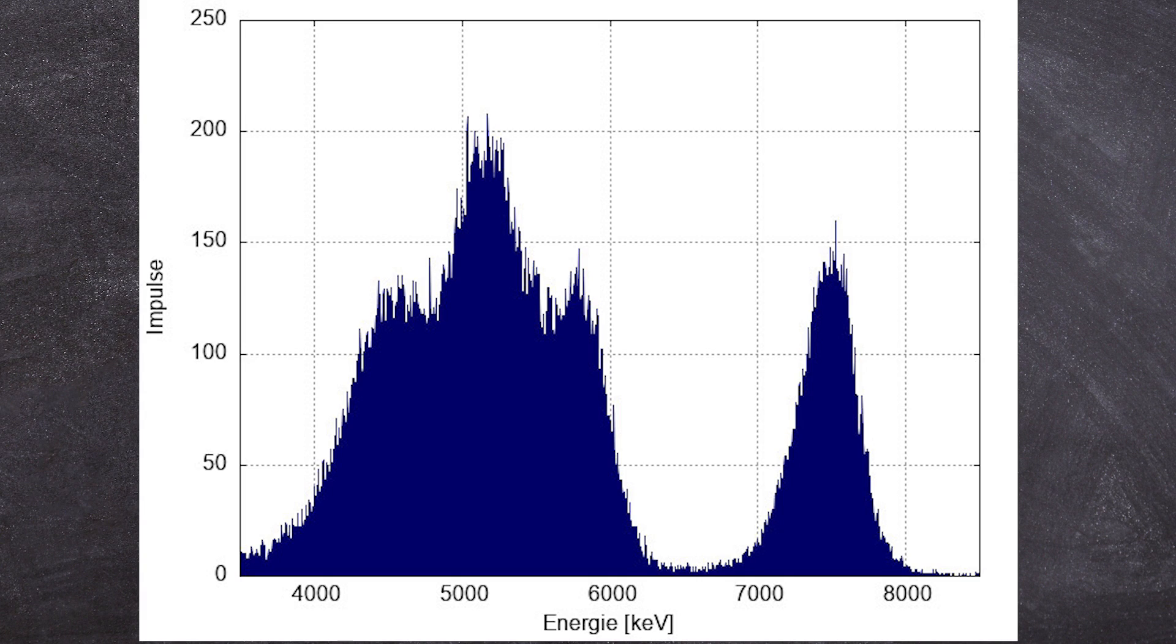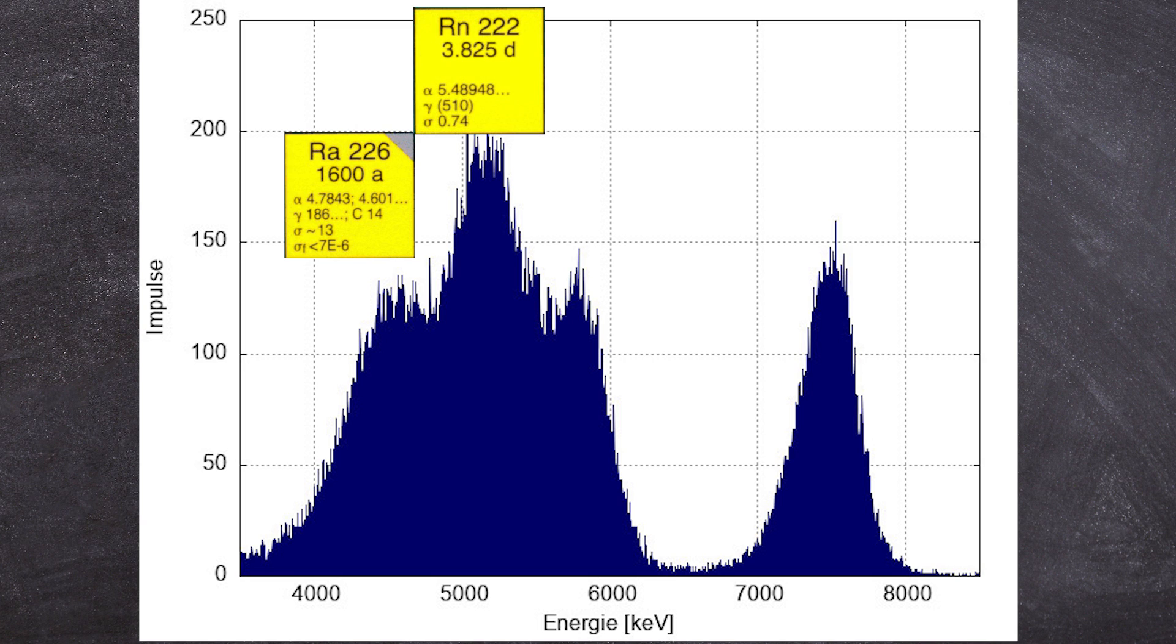Now, you might be wondering about the varying alpha energies of radium. What we observe in this spectrum is characteristic for radium-226. In this spectrum, you can recognize many of the daughter nuclei from the radium, which are also alpha emitters. Specifically, you can see radium-226 at 4.7 MeV, radon-222 at 5.4 MeV, polonium-218 at 6 MeV, and polonium-214 at 7.6 MeV.